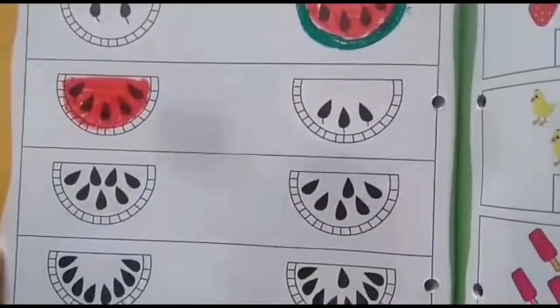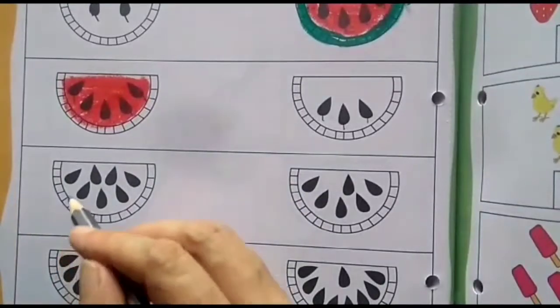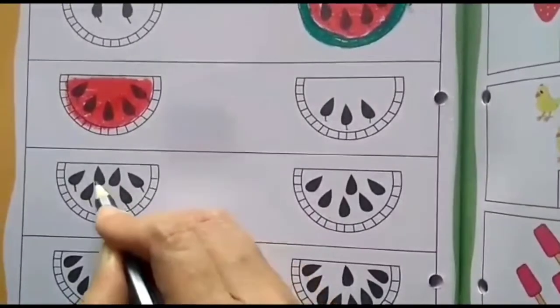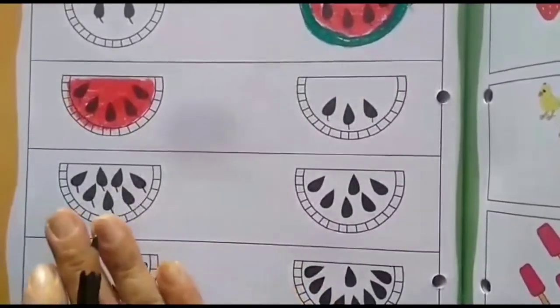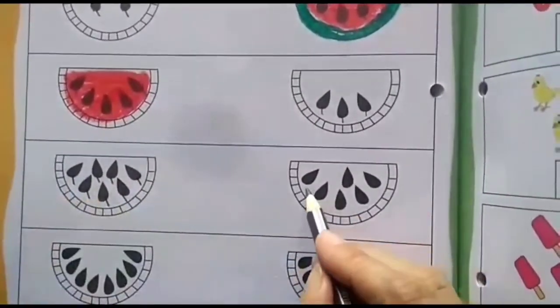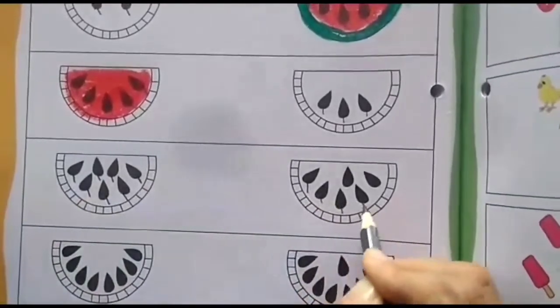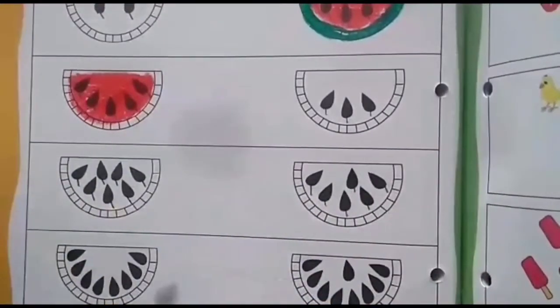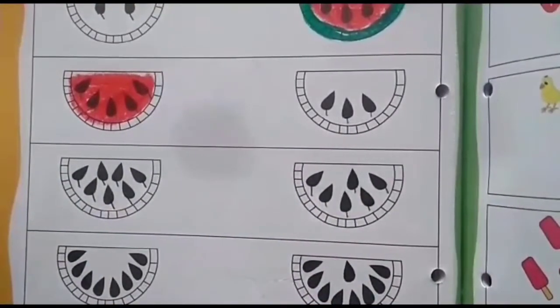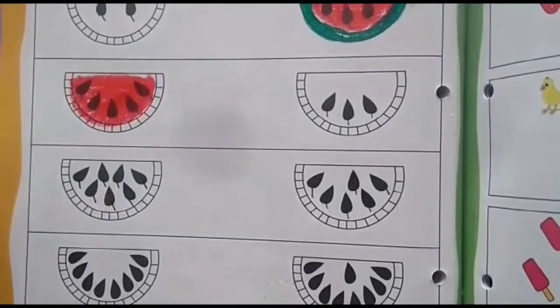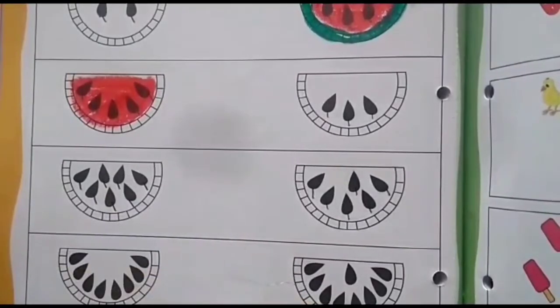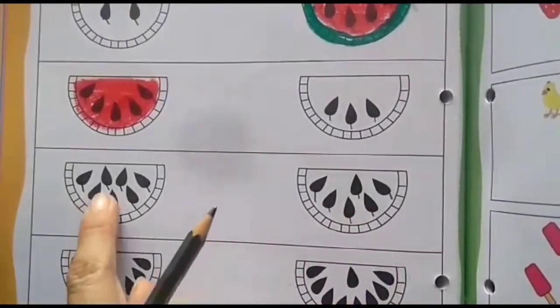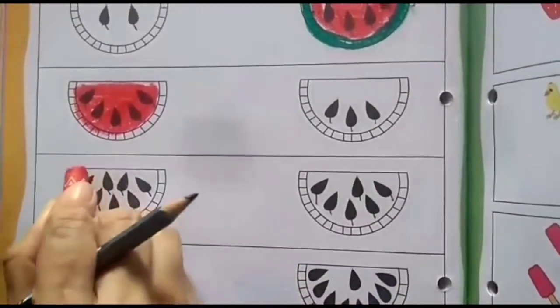Fine. Let us move on to the next one. Let's count how many seeds are there. 1, 2, 3, 4, 5, 6 and 7. So 7 seeds are there. Let us count here. 1, 2, 3, 4, 5 and 6. So tell me 7 is more or 6 is more? Yes. Obviously 7 is more because 7 comes after 6. Right? So which watermelon to color? This or this? I know your answer is right. We have to color this watermelon. Let's do it.